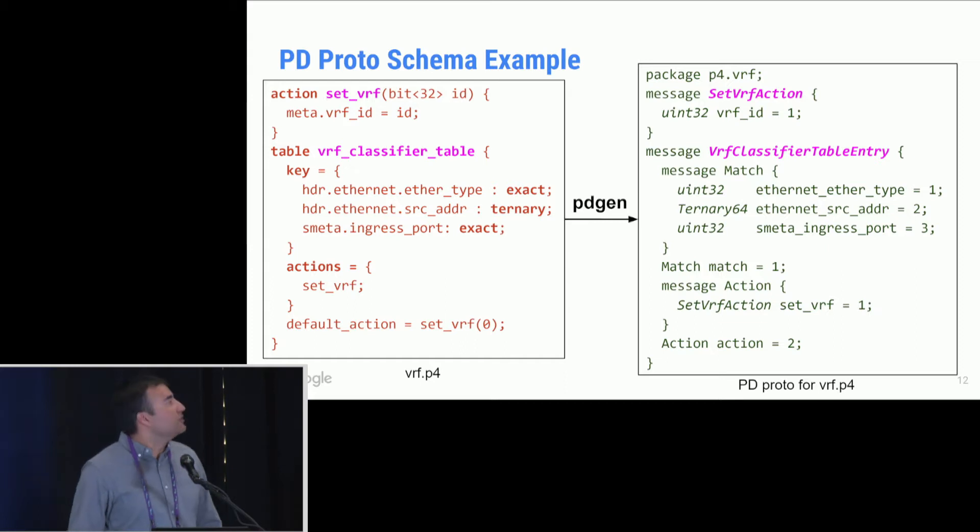So let's look at an example of this PD proto schema. On the left-hand side is the familiar VRF classified example. On the right-hand side, we have the schema. So you'll see here that corresponding to the table name, we have a new message type. Message essentially defines a new type in the proto world. And within that VRF classified table entry type, we have a match and an action type as well. And this line here, match equal to one, it instantiates, it shows that there is a variable of type match within this table entry structure. And that structure consists of these three fields corresponding to the types of the matches that you had here. So here you're doing an exact match, so you want to send just one uint 32. Here you want to do a ternary match, so you want to send the mask as well as the value.